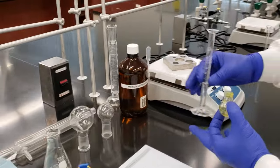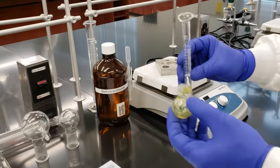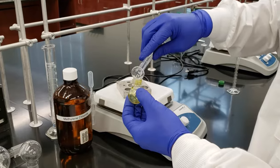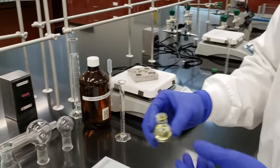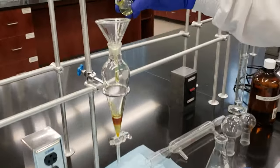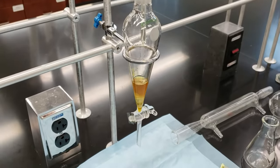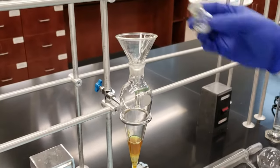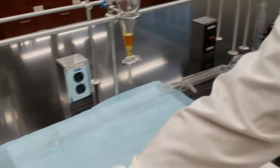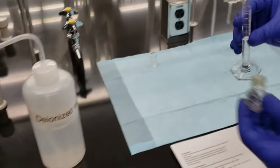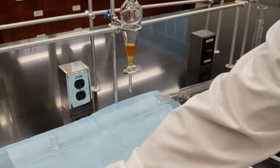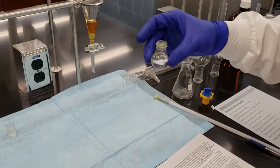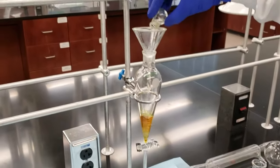The first rinse that we're going to do is five milliliters of methylene chloride. That will go into our reaction vessel. We're going to try and get out anything remaining, any of our product that remains. We'll swirl that and we'll pour it down into our separatory funnel. Next, we'll take a five milliliter portion of deionized water. We'll pour that into our reaction vessel, give that a second swirl, and then pour it into our separatory funnel.